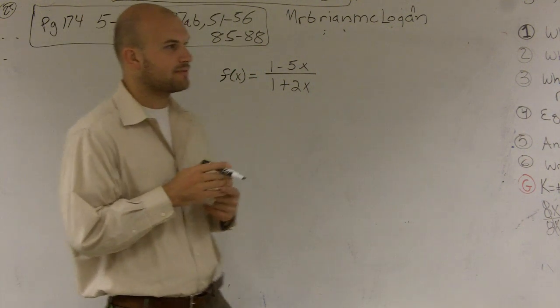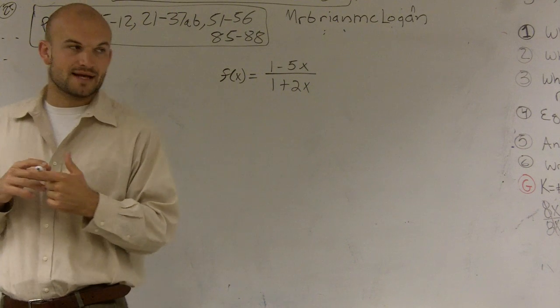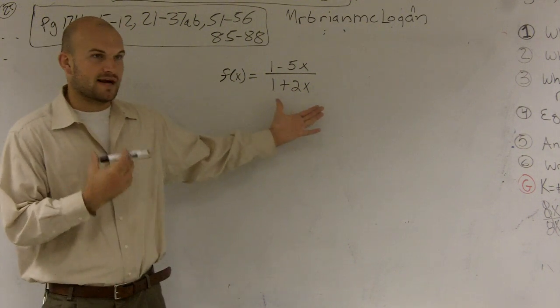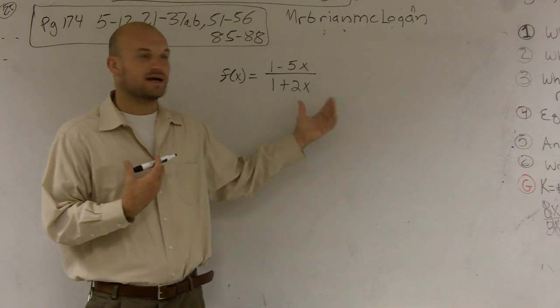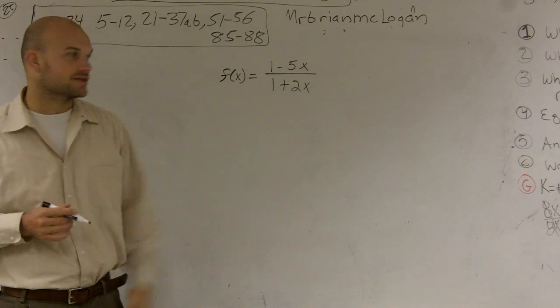So first thing, if you remember, when we're talking about domain for a rational function, what we need to do is we need to say your domain is going to be all your values except for anything that's going to make your bottom zero, right? Because we cannot divide by a zero. So therefore, let's go and figure out what values will give us zero on the bottom.